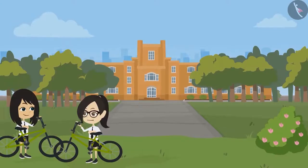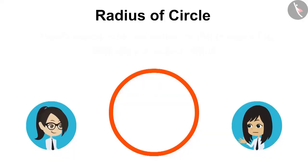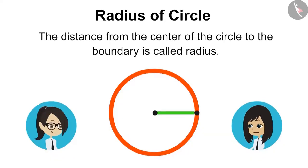Now remains the radius. You tell me about it. The distance from the center of the circle to the boundary is called radius.